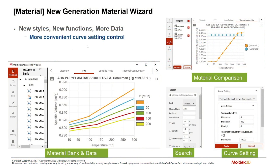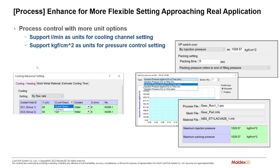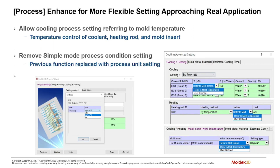Moving on to project management and usability upgrades: the material wizard's interface has been updated for a more modern look and gives more options for interpreting the output curves. You also have more intuitive options for material compare, material search, and curve settings. We've also included more control with different unit options — for example, liters per minute in cooling channel settings and kilogram-force for pressure control settings.